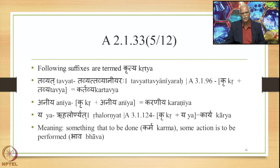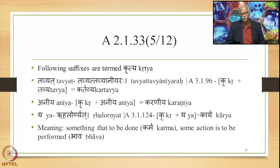The second Kritya suffix is Aniyya. The Sutra Tavyat Tavyani Yaraha states Tavyat as the first suffix, Tavya as the second, and Aniyya as the third. There is no formal difference between Tavyat and Tavya — only a difference of accent, which we shall study in detail in the Shasthi Tatpurusha Samasa later. We add Aniyya to the verbal root Kru and derive Karaniya. We also have Nyat stated by Achoyat as well as Ruhalor Nyat 3.1.124: Kru plus Nyat gives the form Kariyya, meaning something that is to be done.